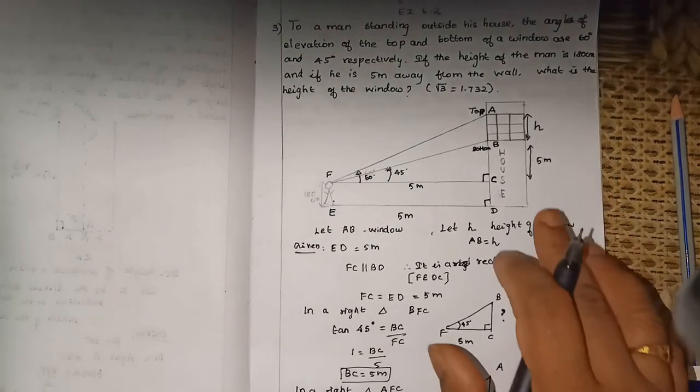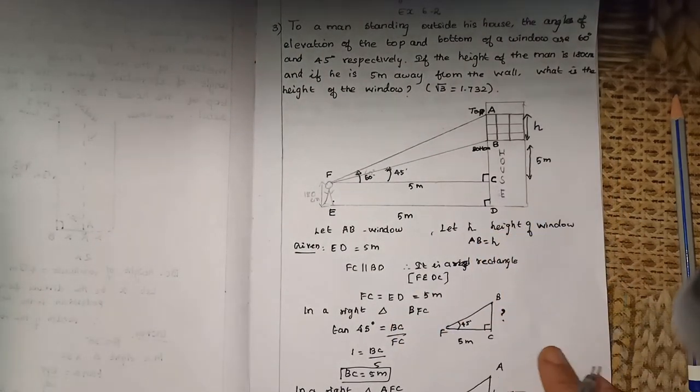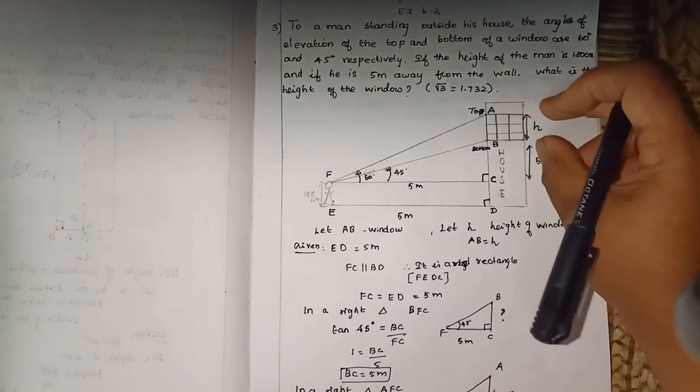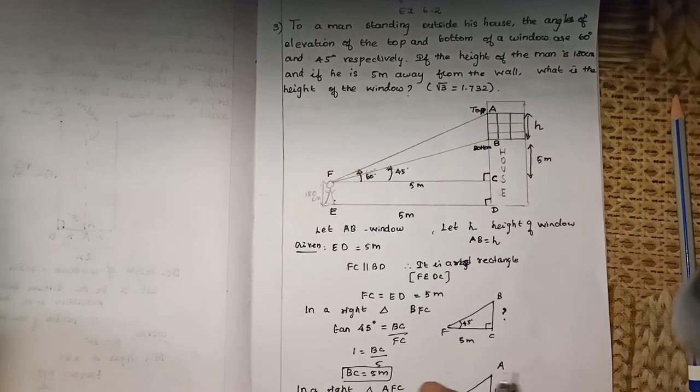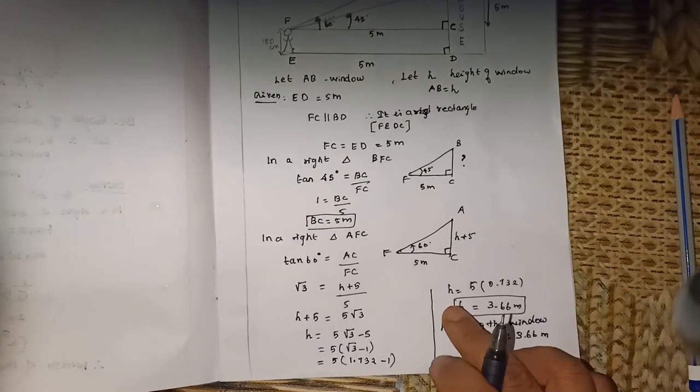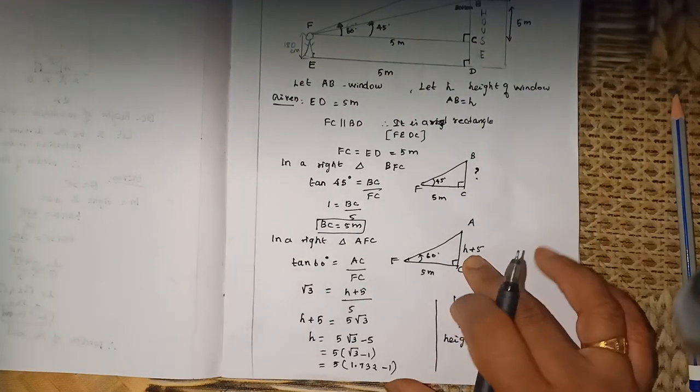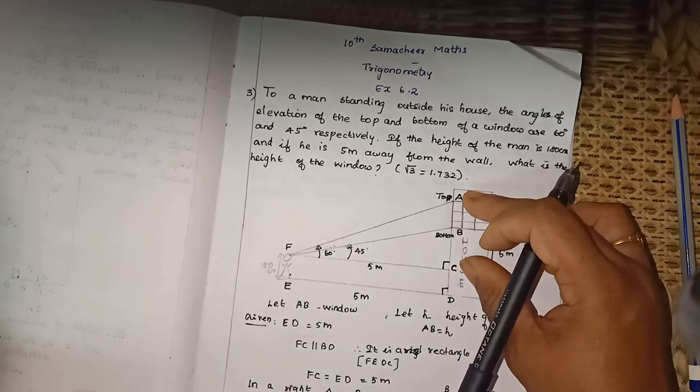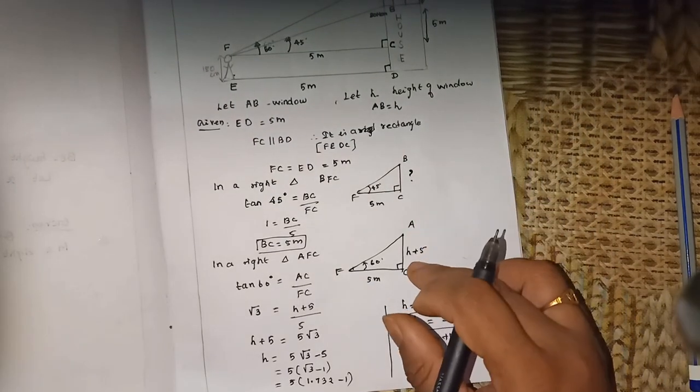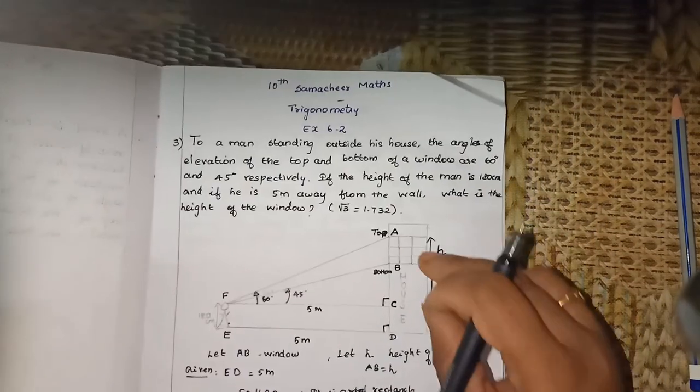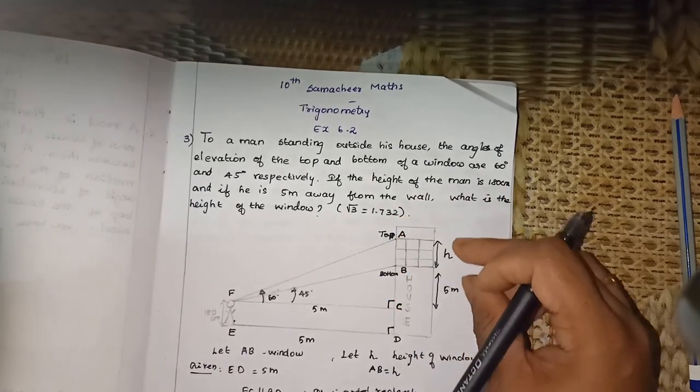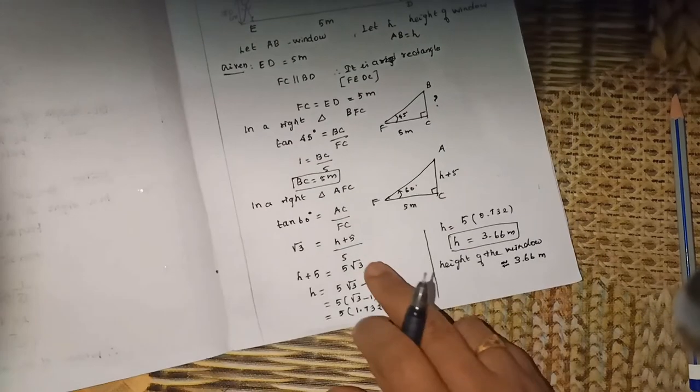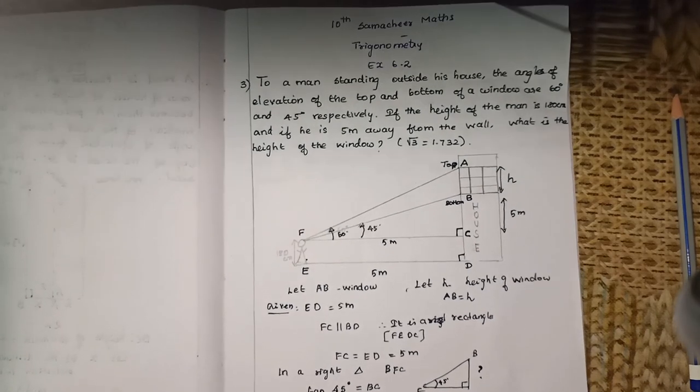Okay, it's a very easy sum. First you have to draw the figure. We have taken H for the height of the window, BC is 5, and H plus 5 is applied. Yes, thank you.